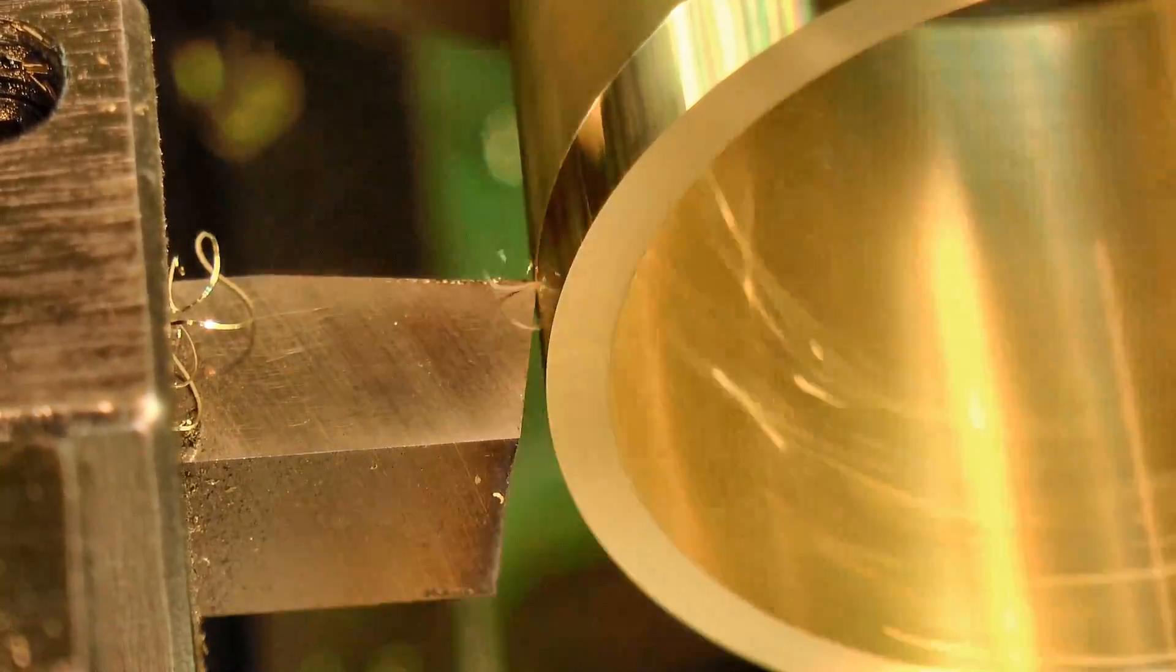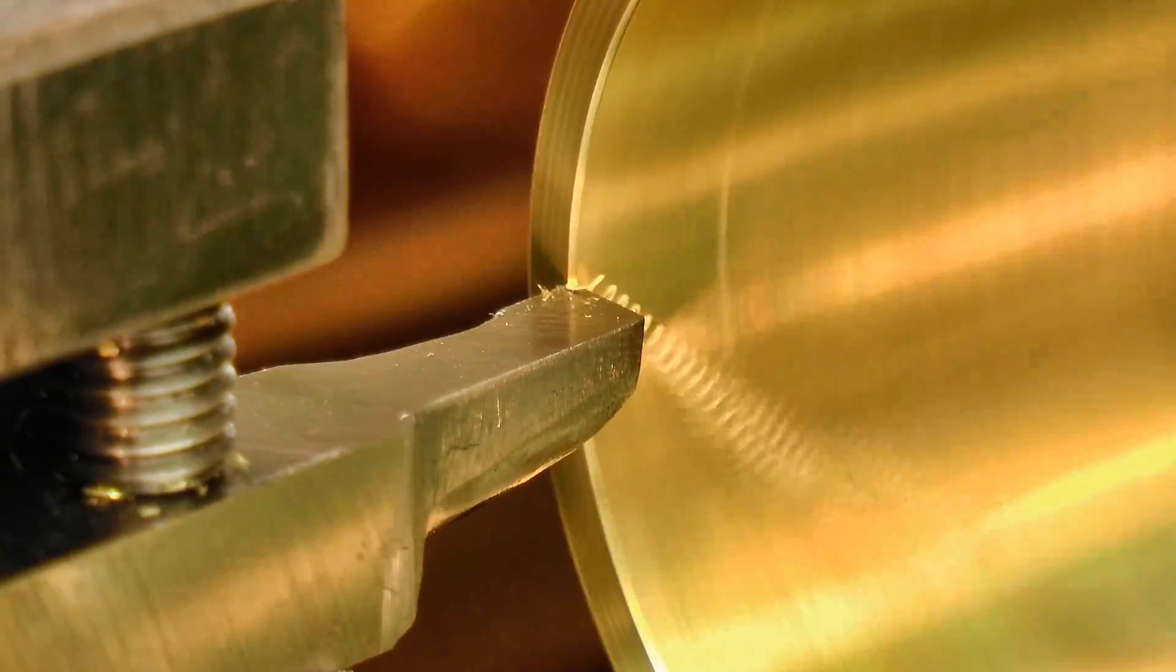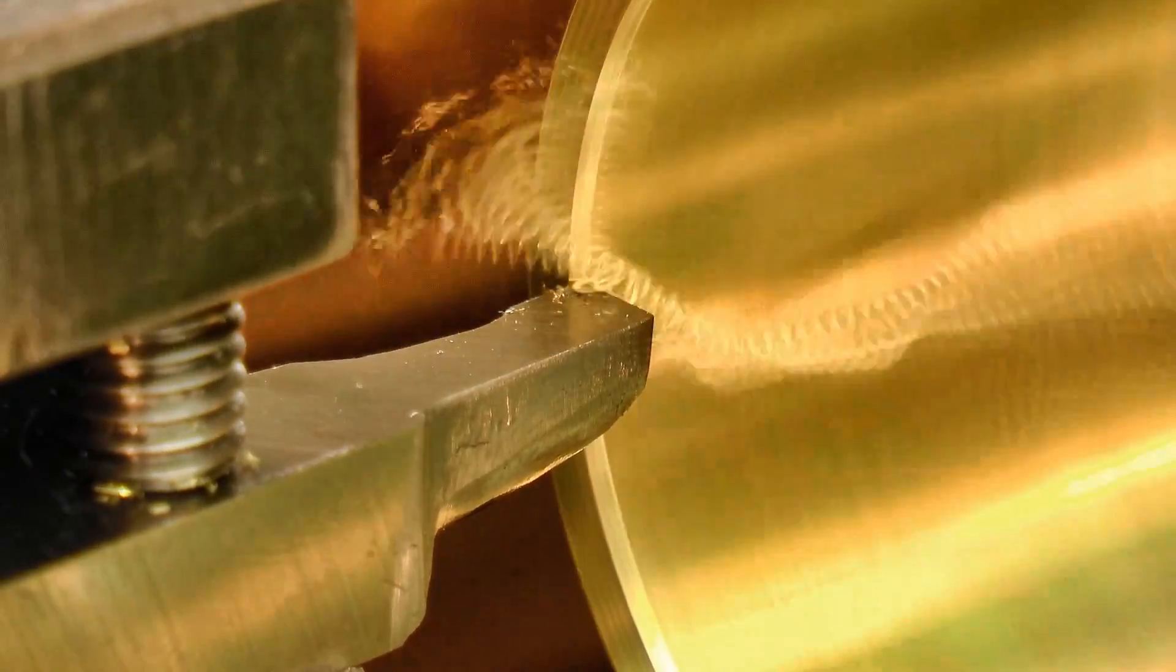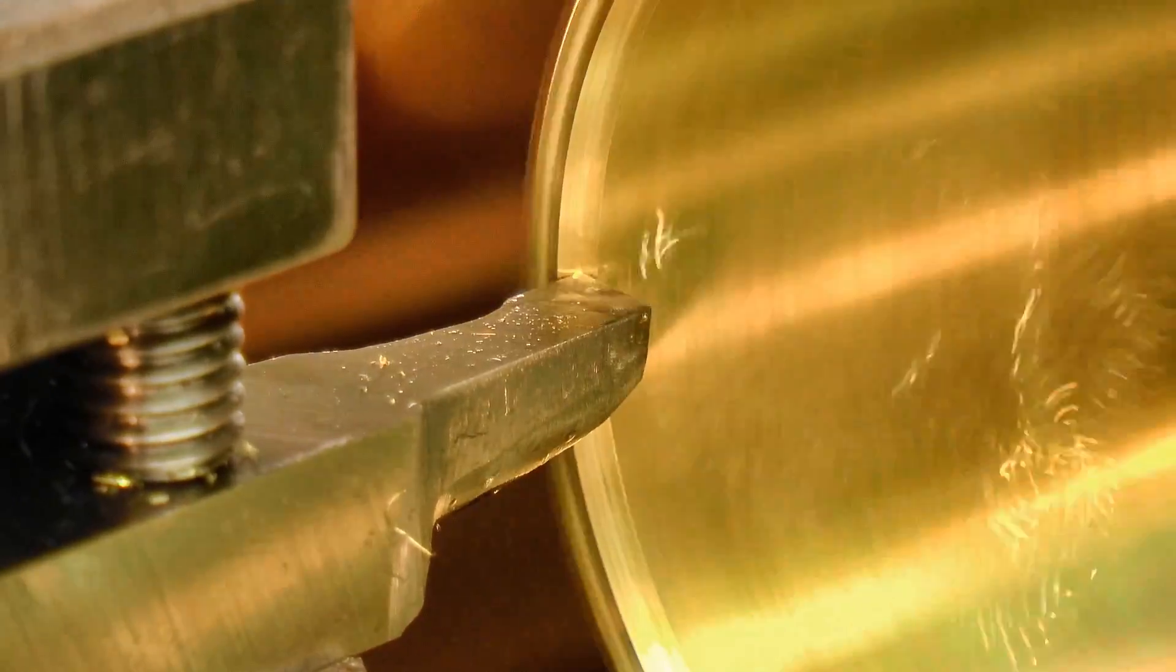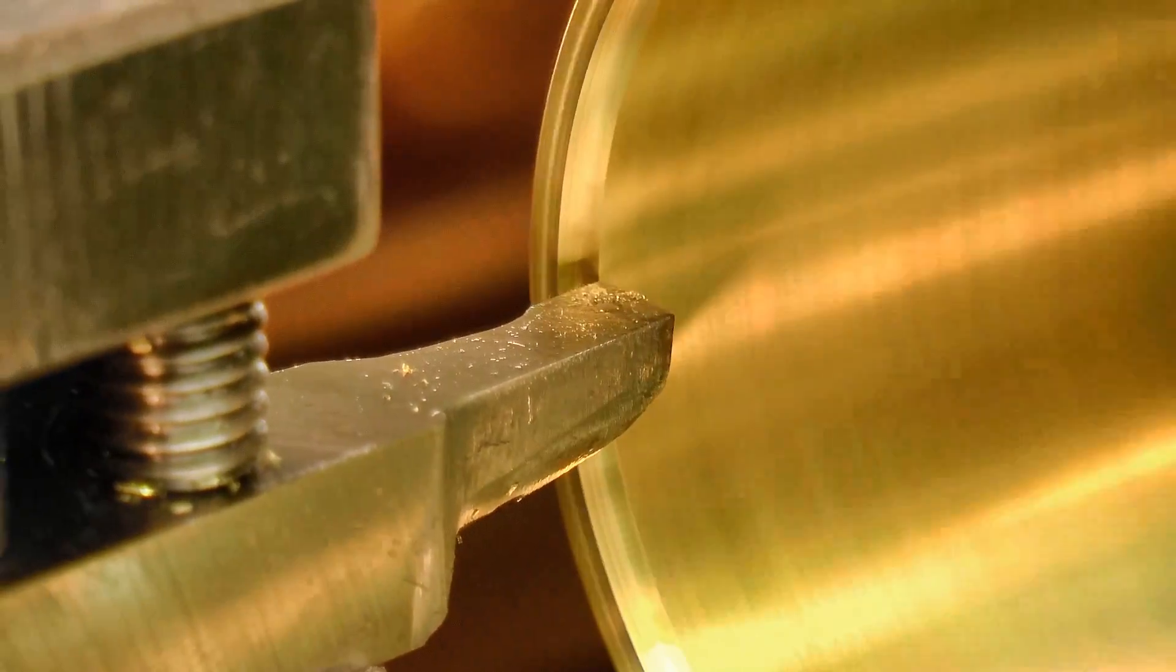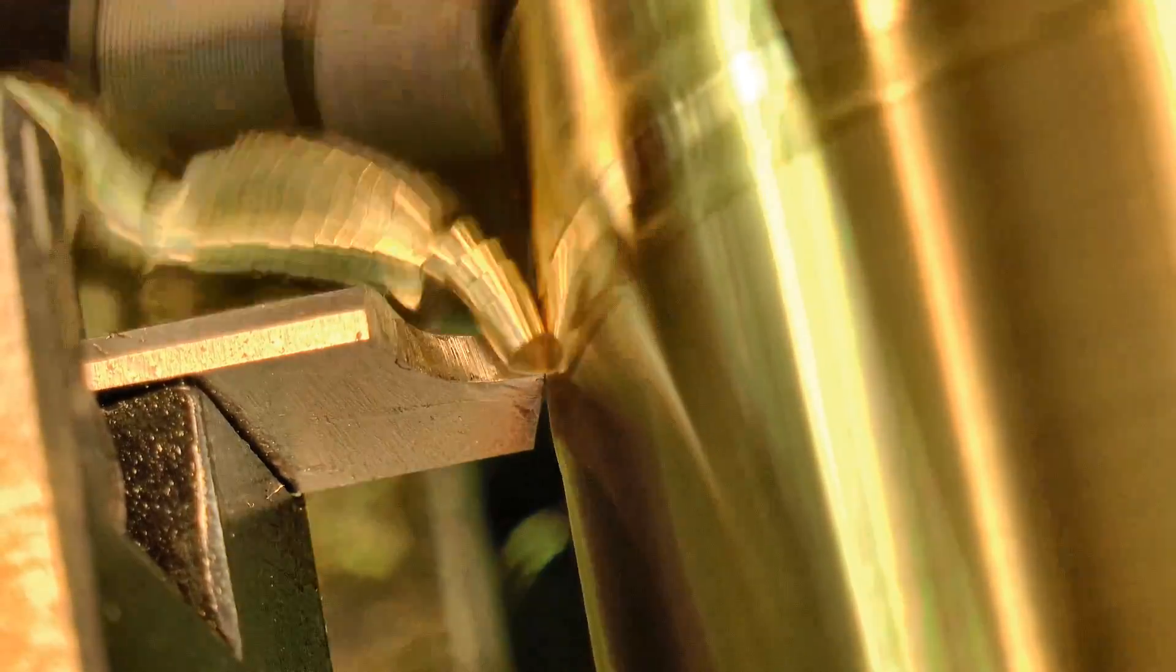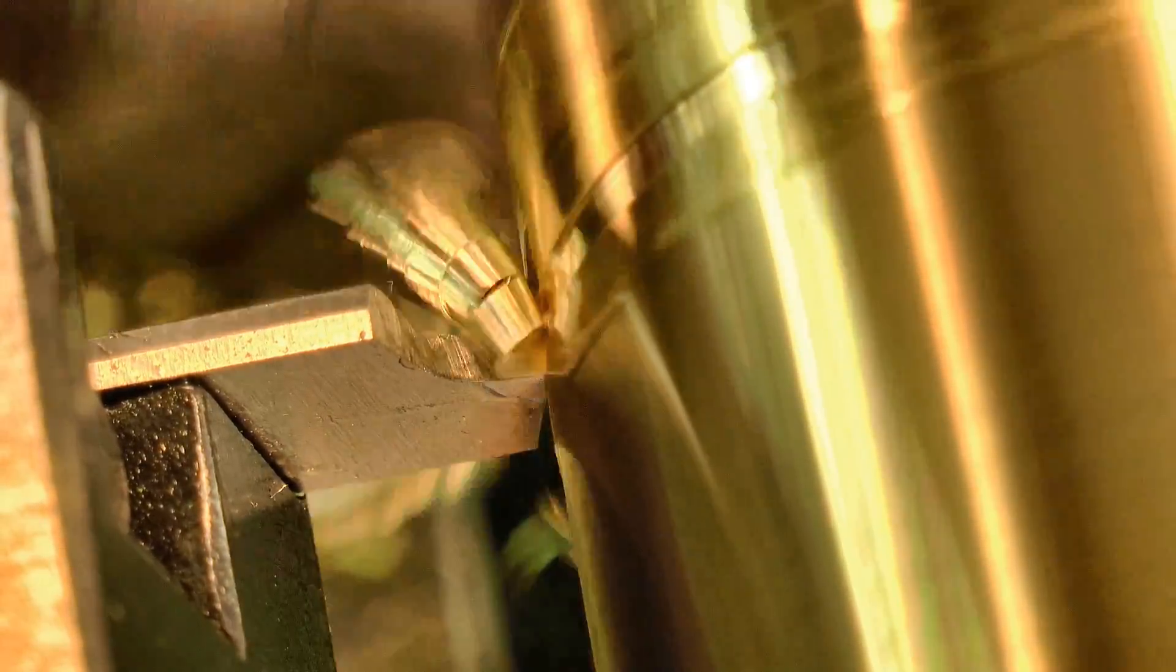Both the inside and outside were given a skim cut to true up the surfaces, and then I machined the recess for the rear cap, taking quite light cuts to get a good finish. This section was then parted off, a little over length, to allow for machining of the other end.